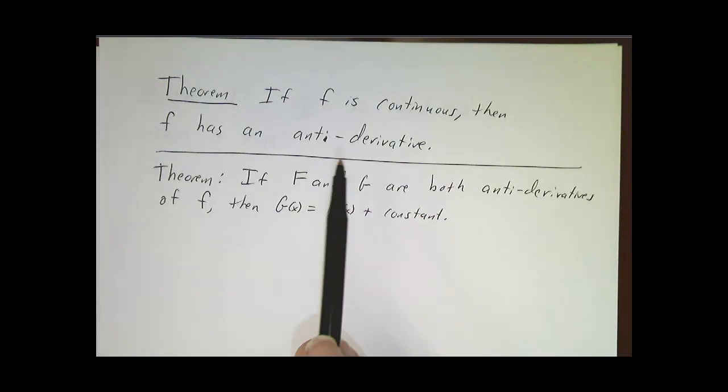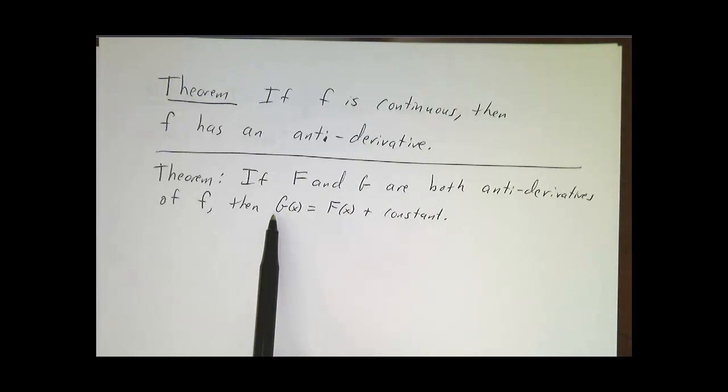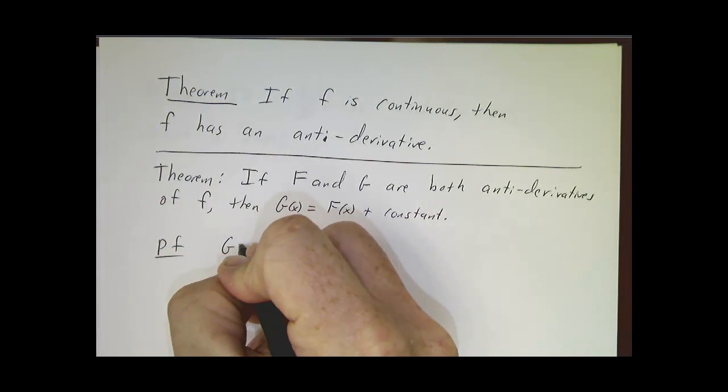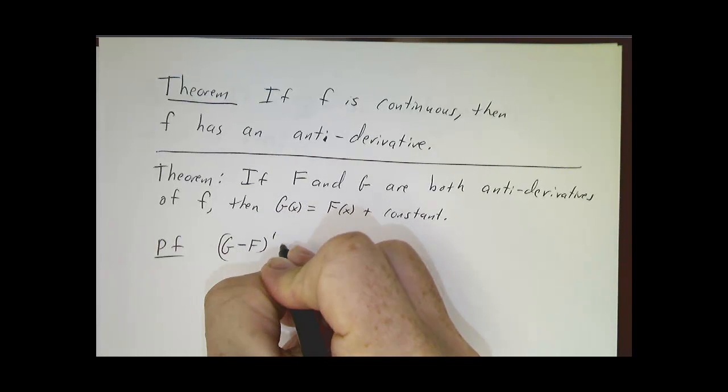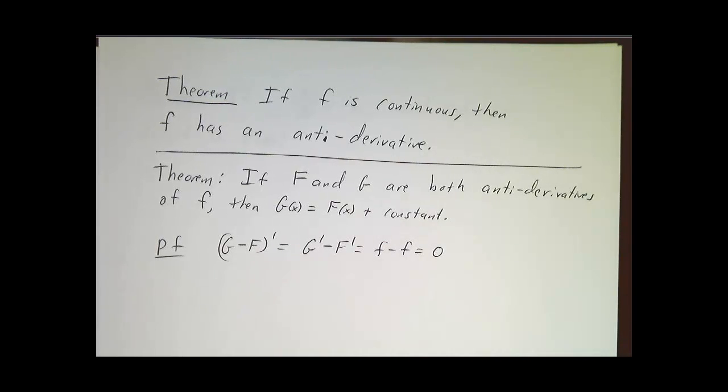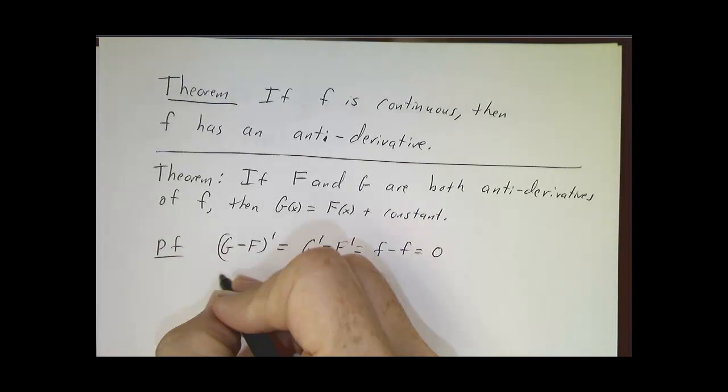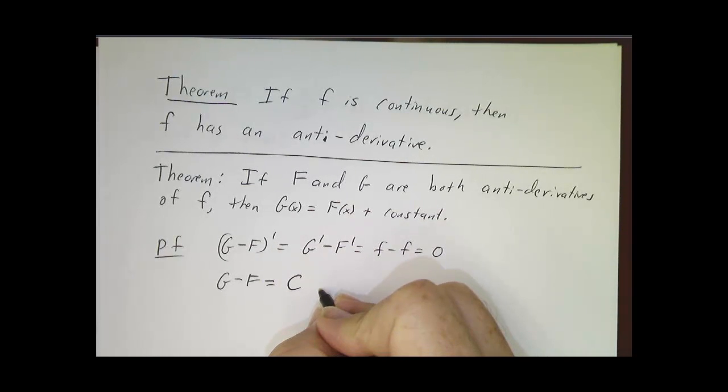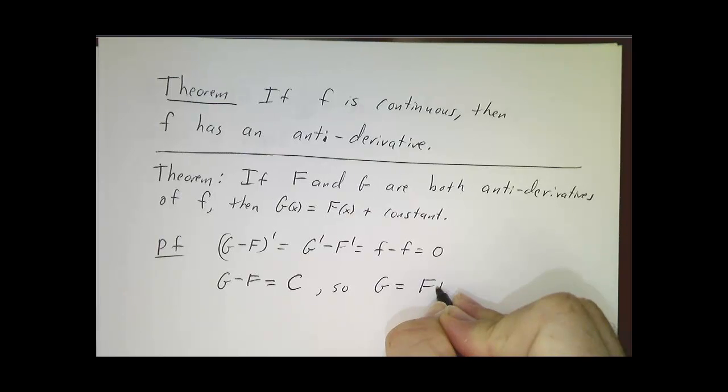If you have two different functions that both have a derivative of little f, then I claim that the difference between them is a constant. Because if you take the derivative of g minus f, that's g prime minus f prime, so that's little f minus little f, and that's zero. And we proved, back when we did the mean value theorem, that the only function whose derivative is everywhere zero is a constant function. So g minus f is a constant, so g must be f plus a constant.